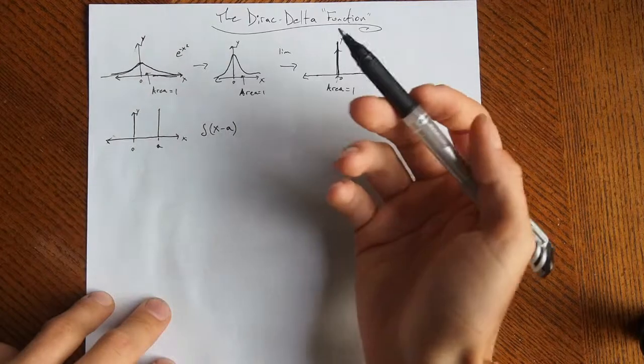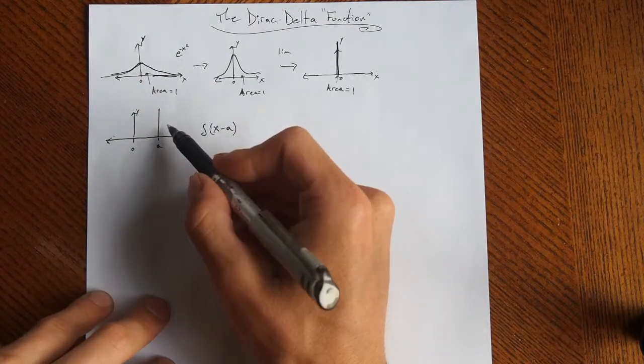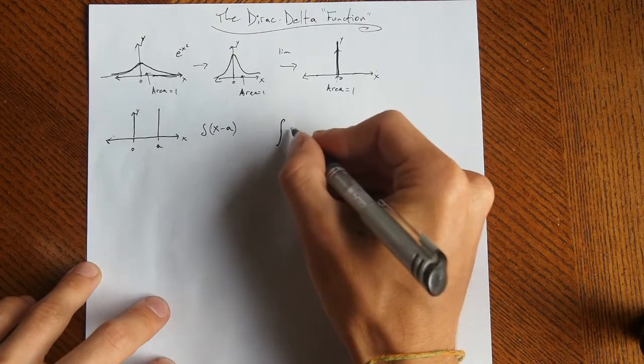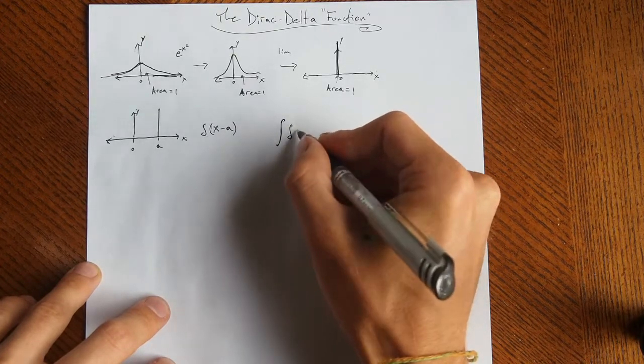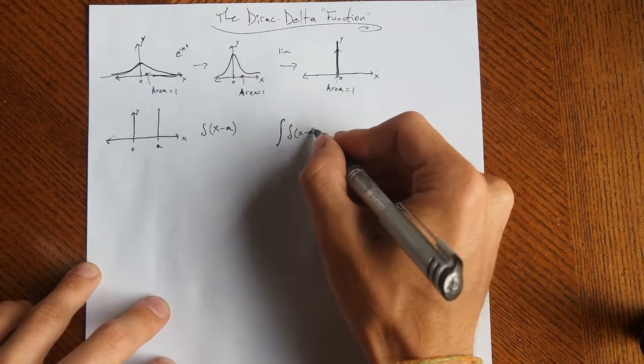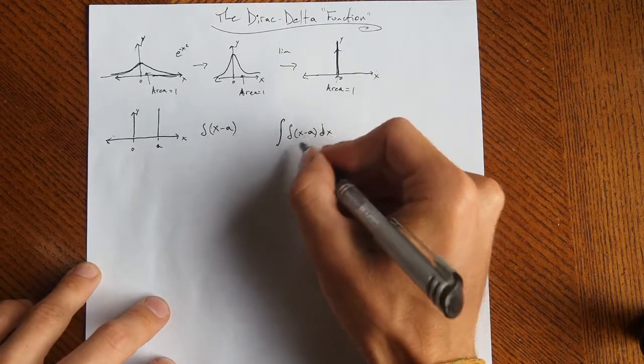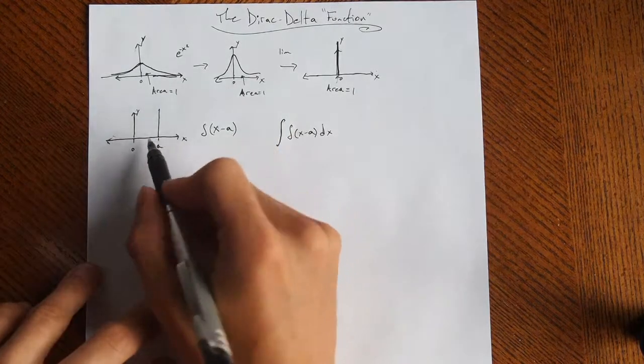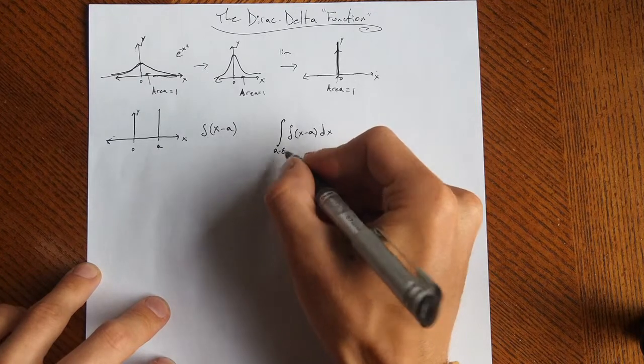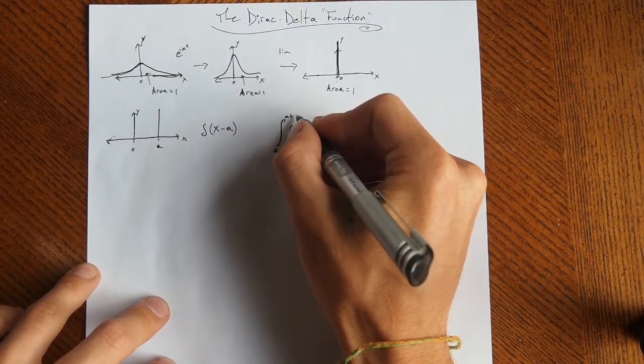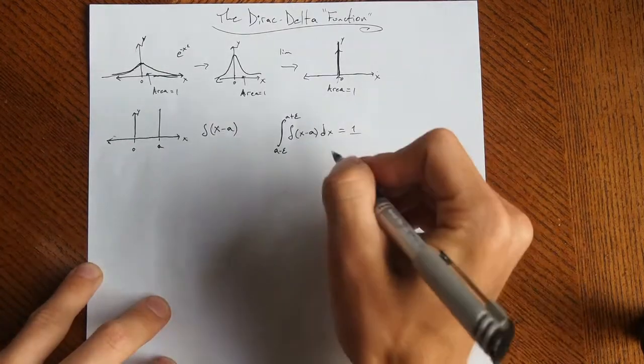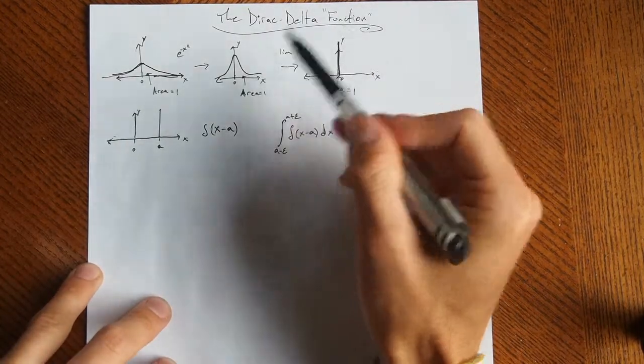Of course, this goes up forever, I don't have forever to write, but it has an area equal to 1. So that means if we integrate the delta function of x minus a, we can use any limits we want as long as they include a, as long as they surround the point a, so from a minus some number to a plus some number, that's going to equal 1, and that's the definition of this generalized function.